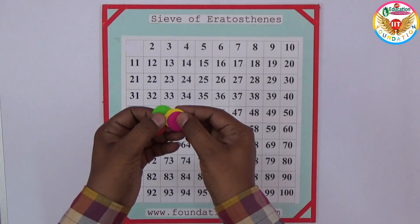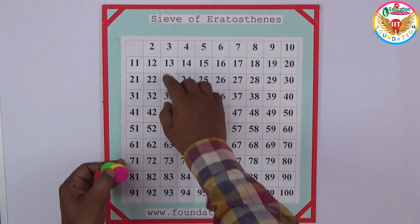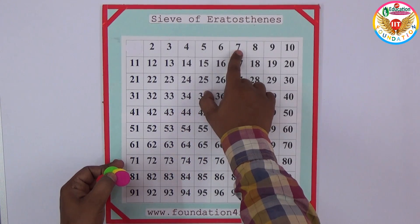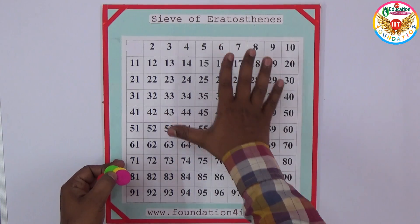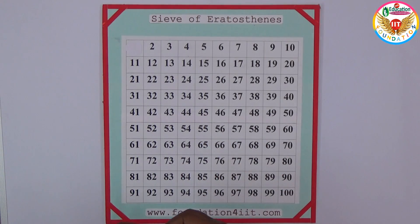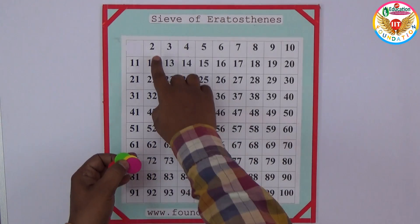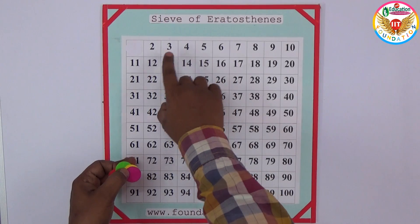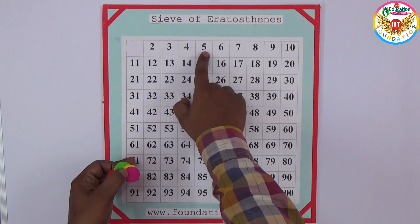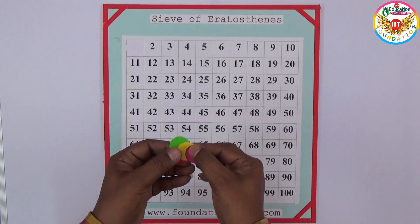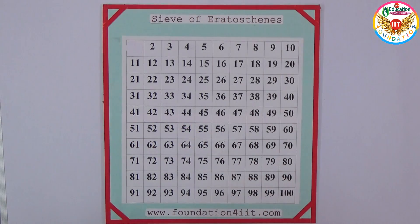Starting from 2, we need only 2, 3, 5, and 7. For these four numbers' multiples only, we can cover with colors. The remaining numbers will automatically all be prime numbers. We will take four colors for 2, 3, 5, and 7 and close their multiples.